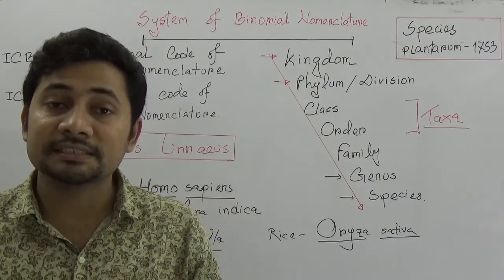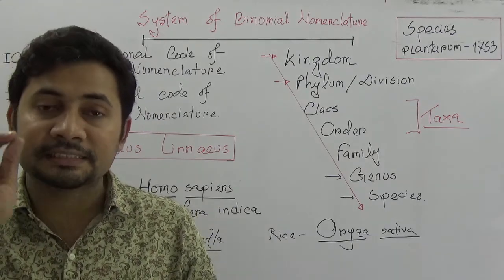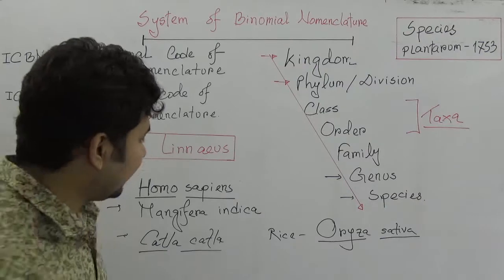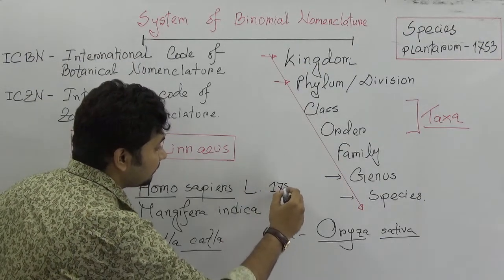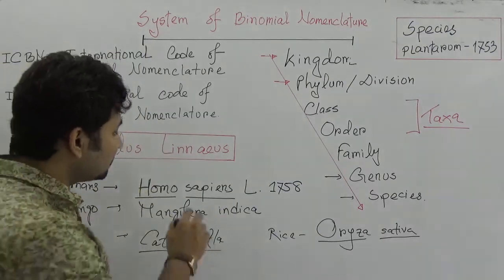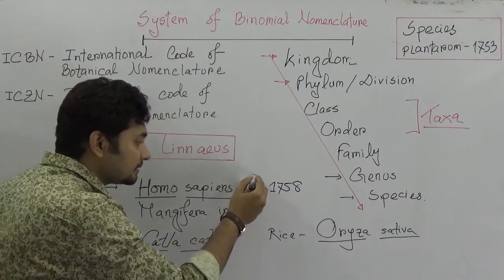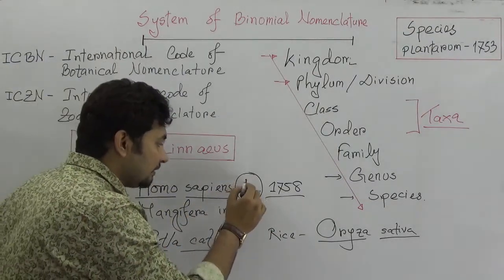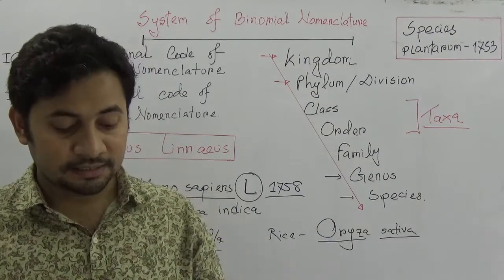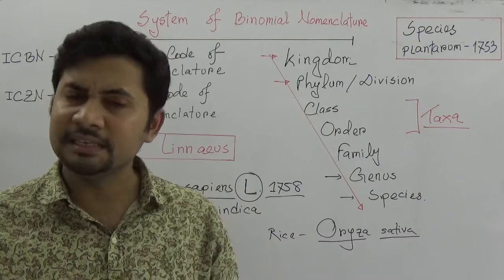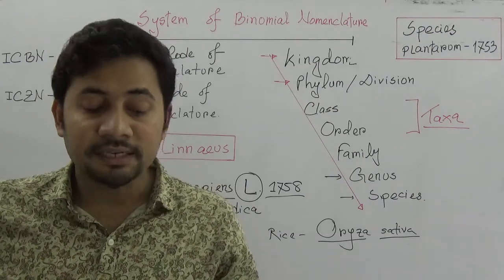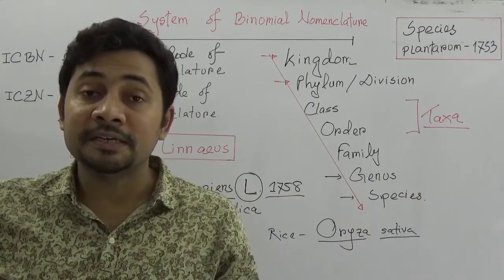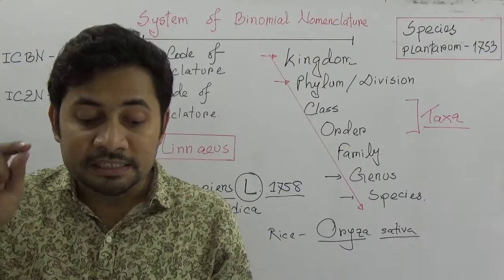Principle number seven: if an organism is named by a scientist, the earliest legitimate name given by the first scientist will be accepted in accordance with the rules of priority. For example, Homo sapiens is written as 'L. 1758', meaning it was named by Linnaeus in 1758. Principle number eight: the scientist who gave the scientific name can be cited in abbreviated form at the end of the binomial name with the year of naming.